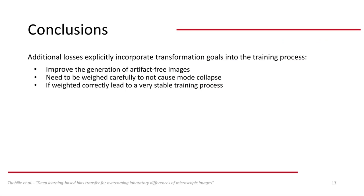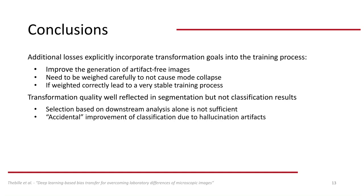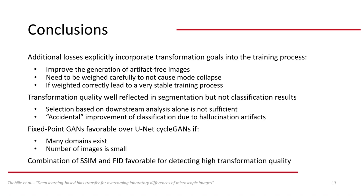There are several conclusions we can draw from these findings. Firstly, the additional losses help with improving the generation of artifact-free images, but they need to be weighed carefully to enable a stable training process. Secondly, the transformation quality reflected the resulting segmentation improvement well. However, it did not reflect the classification results, which is why selecting a fitting approach for biostransform based only on downstream analysis is very dangerous, as hallucination artifacts could accidentally improve the classification scores. As a guideline for future research, we recommend the combination of SSIM and FID for detecting high transformation quality. Additionally, Fixed Point GANs are recommendable over UnitCycleGANs if many domains exist or if the number of images is small, as only a single generator has to be trained for transforming between any number of domains.